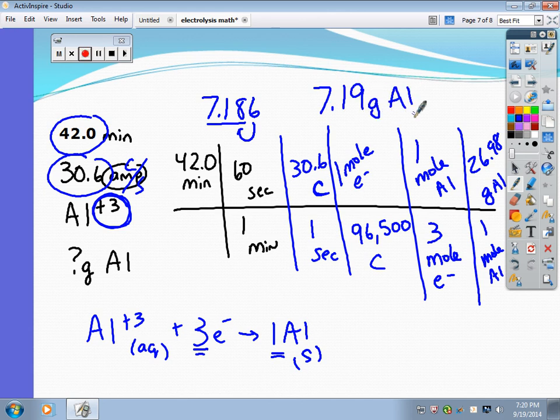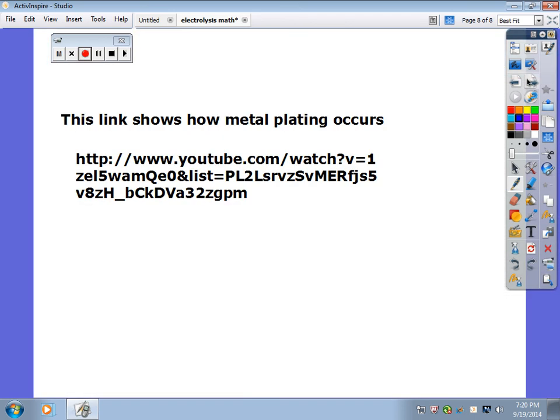There's a really good video here that shows you about how metal plating occurs. And this is very important if I want to plate silver. If you have silver at home, your silver spoons are not solid silver. Chrome bumpers are made this way. And so this is a nice video that kind of shows you how this works.